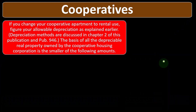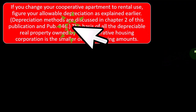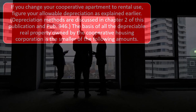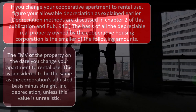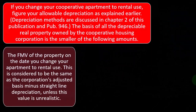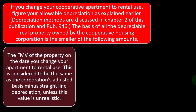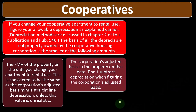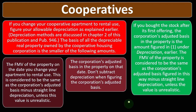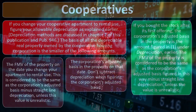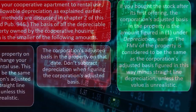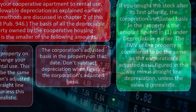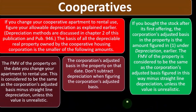Cooperatives: if you change your cooperative apartment to rental use, figure your allowable depreciation as explained earlier. The basis of all the depreciable real property owned by the cooperative housing corporation is the smaller of the following amounts: the fair market value of the property on the date you change your apartment to rental use — this is considered to be the same as the corporation's adjusted basis minus straight-line depreciation, unless this value is unrealistic — or the corporation's adjusted basis in the property on that date. Don't subtract depreciation when figuring the corporation's adjusted basis. If you bought the stock after its first offering, the corporation's adjusted basis in the property is the amount figured under depreciation. The fair market value is considered to be the same as the corporation's adjusted basis figured in this way minus straight-line depreciation, unless the value is unrealistic.